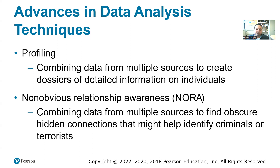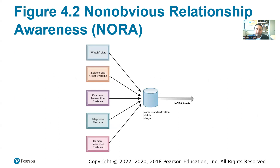For example, the United States government uses NORA to trace terrorists, and insurance companies use it to decide if a person will default on their loan. The system collects data from watch lists, arrest systems, customer transaction systems, telephone records, and human resource records, and then sends real-time alerts — for example, when someone with a terrorist connection reserves a ticket, alerting the National Security Agency.